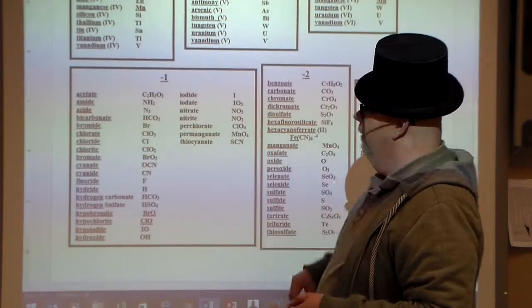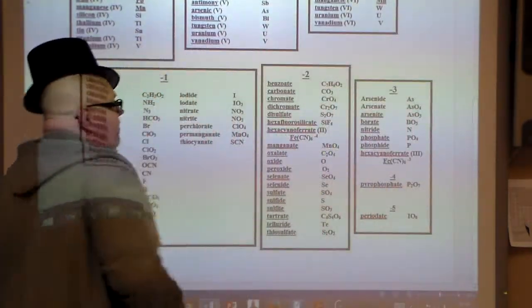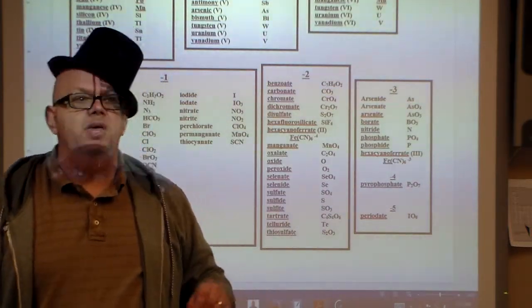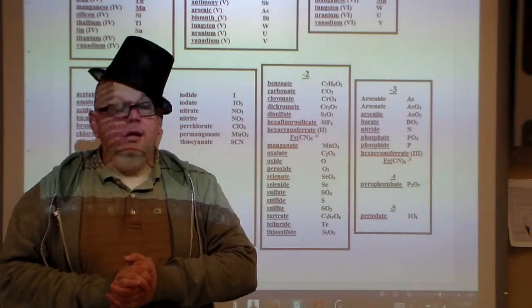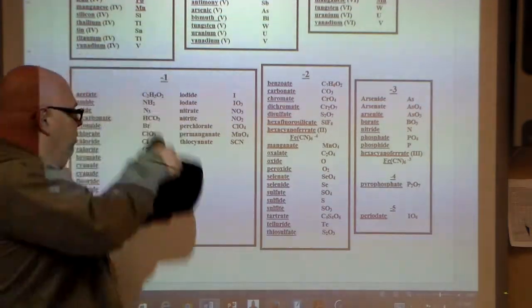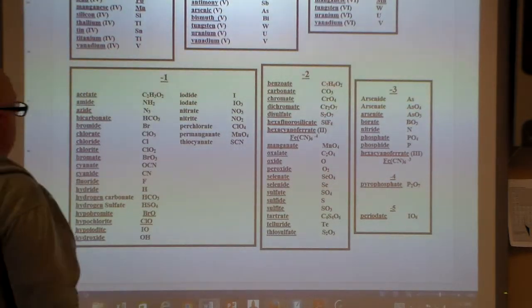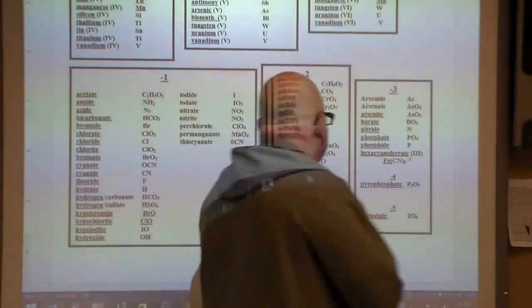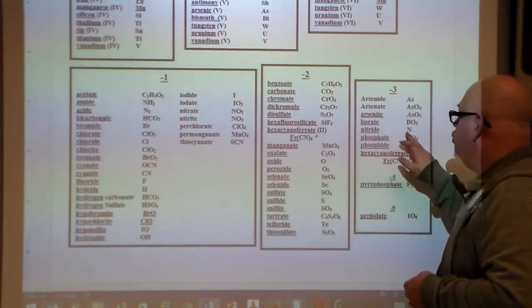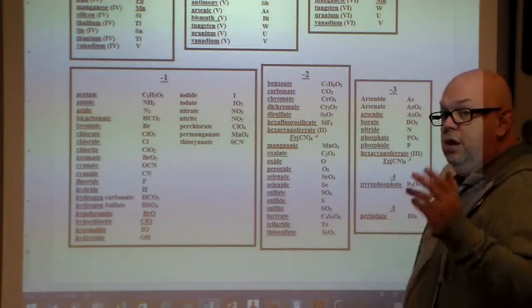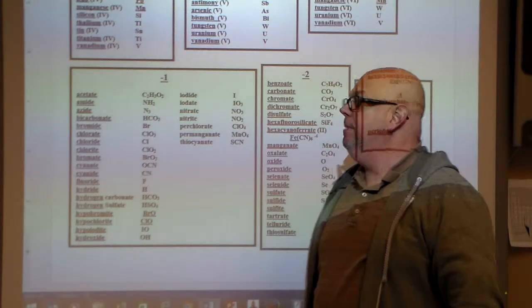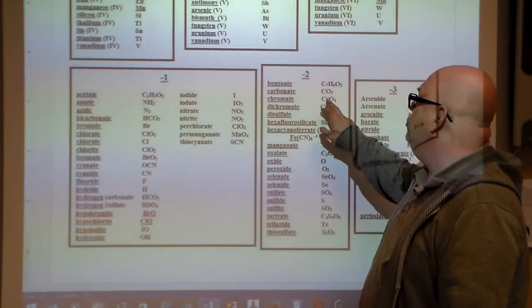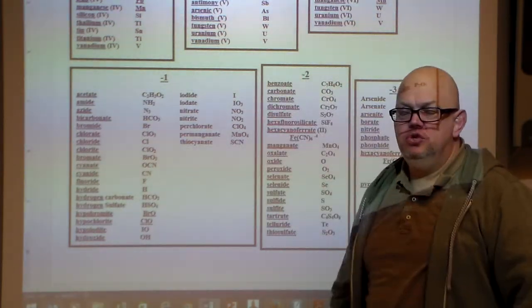Now on the bottom half of the ion chart, we have our negatively charged ions. Some of them are going to be one atom and that's it. Like for example, I'm just going to put the hat off to the side here. Chloride Cl, that's one atom, has a minus one charge to it. Here's nitride N with a minus three charge. But we also have polyatomic ions like benzoate C7H6O2. That whole thing together is a minus two charge.